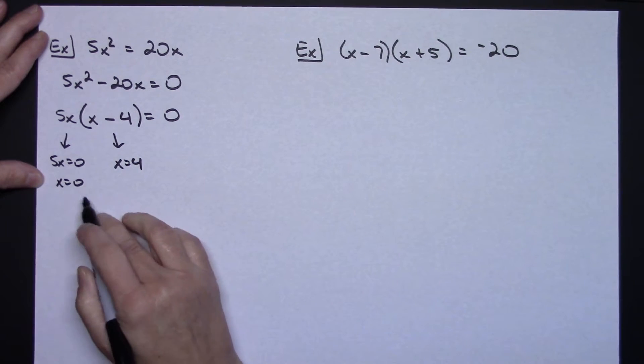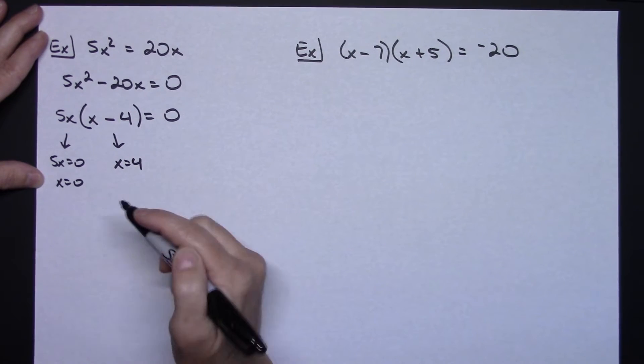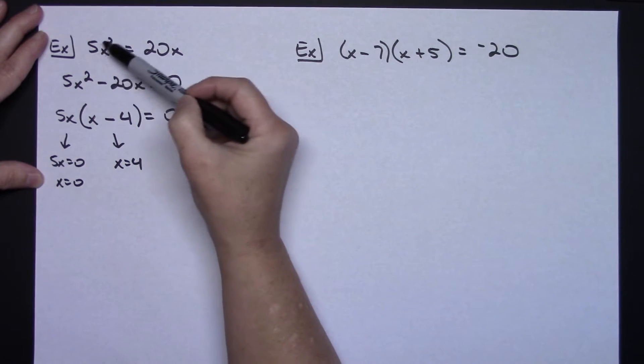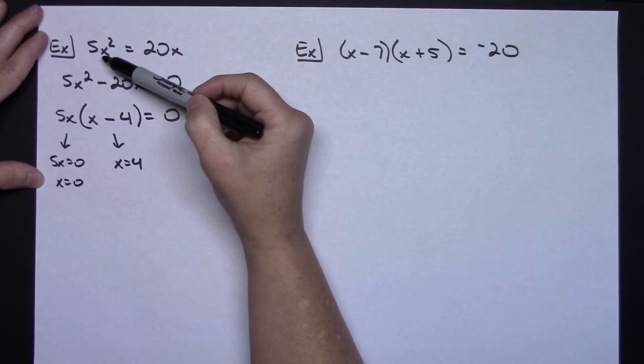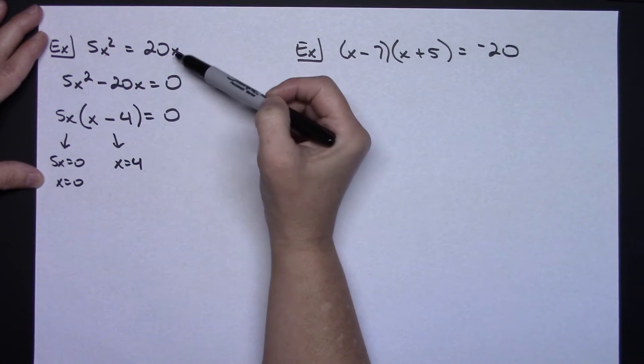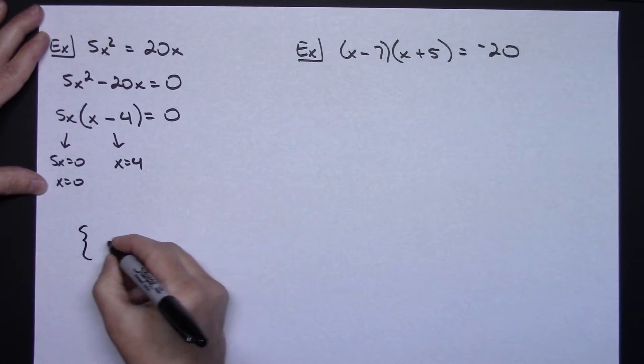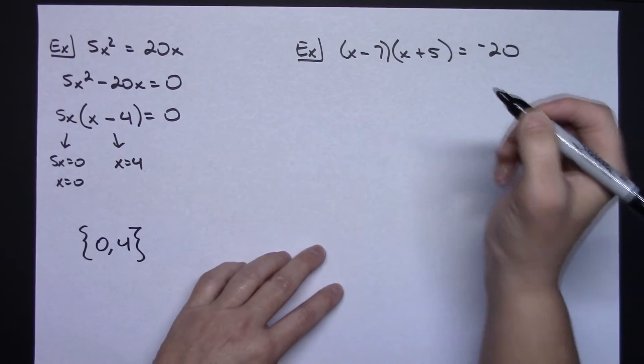Now here again, I have two possible answers. So you should do a check on both of them. The 0 one is going to be easy to check. If I plug 0 in here, this is 0. I plug 0 and that's 0. If I plug 4 in, 4 squared is 16 times 5 is going to be 80. 4 times 20 is going to be 80, so they both do check. So my solution set is 0, 4.